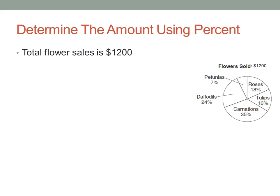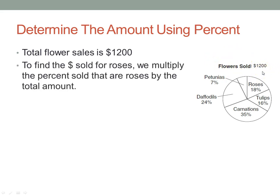Now let's determine the dollar amount from a circle graph. We'll use flower sales — total flower sales is $1,200, shown right there in the graph. We want to find the dollars sold for roses. We're going to multiply the percent sold for roses by the total amount. Roses are 18%, found right there on the circle graph.